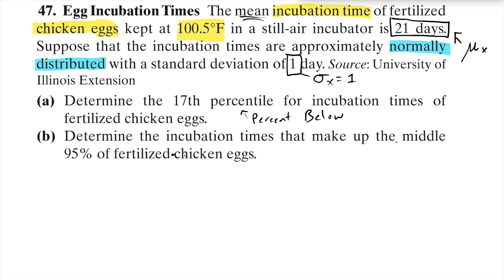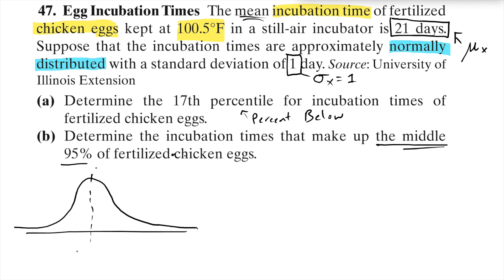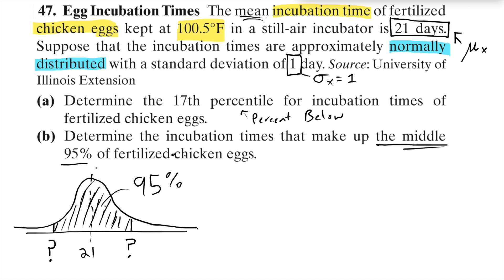Part B asks for the incubation times that make up the middle 95 percent. A picture really helps here. I want two numbers — a lower and an upper — so that the area between them is 95 percent, centered on the mean of 21. There's 100% in the entire curve, so 5% is outside the middle 95%. Because the distribution is symmetric, half that 5% is below and half is above the interval — so it's 2.5% on each side.